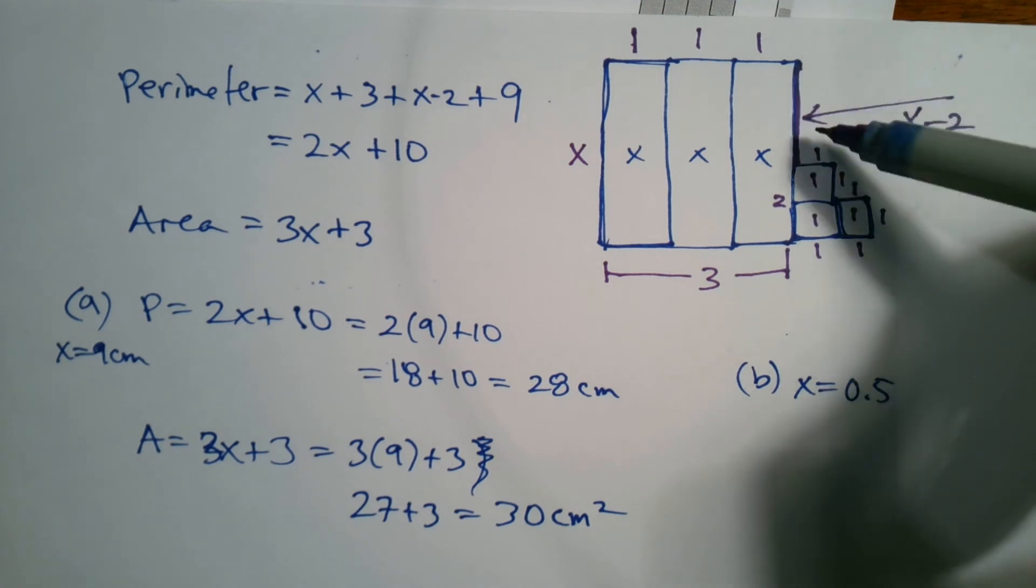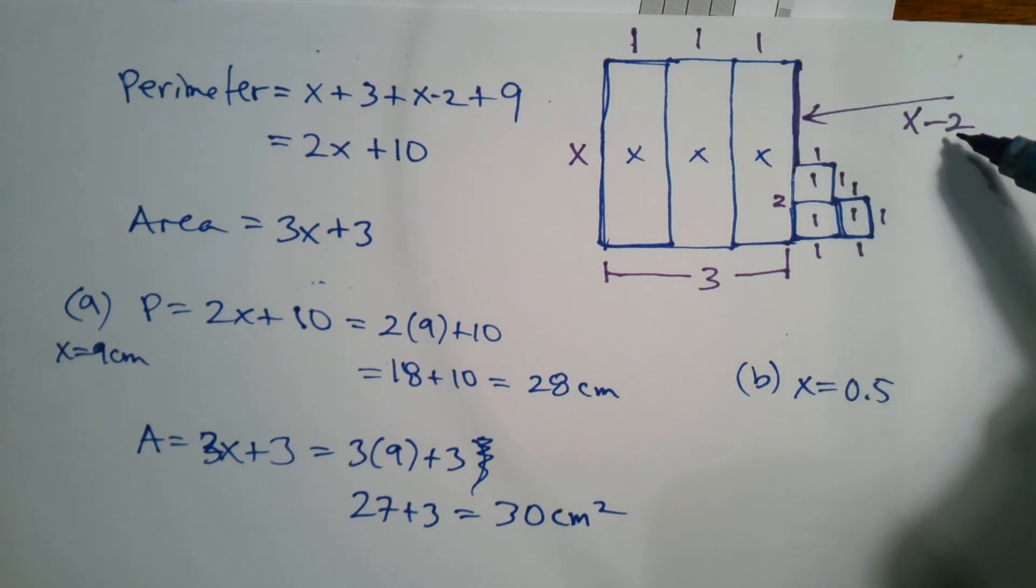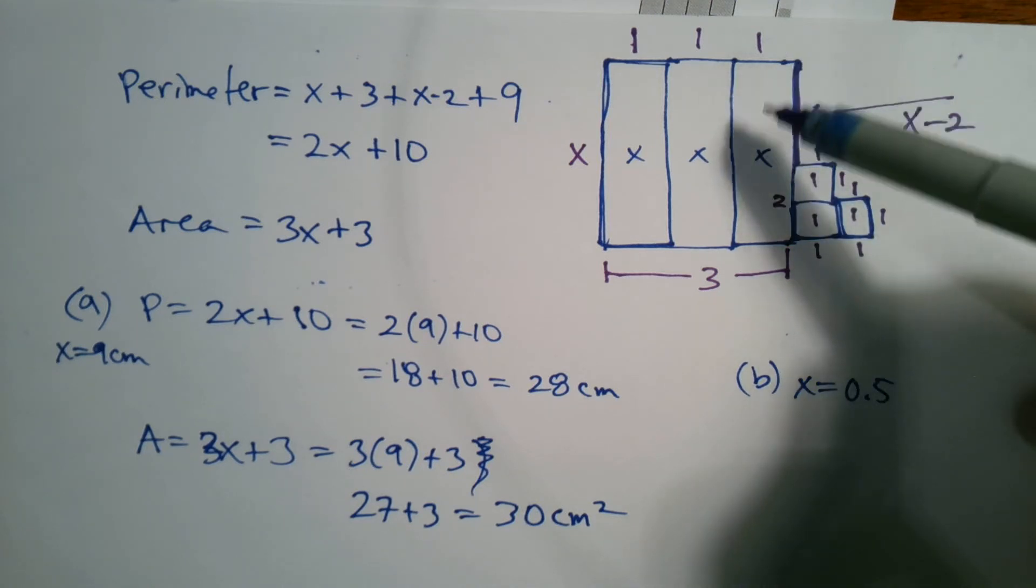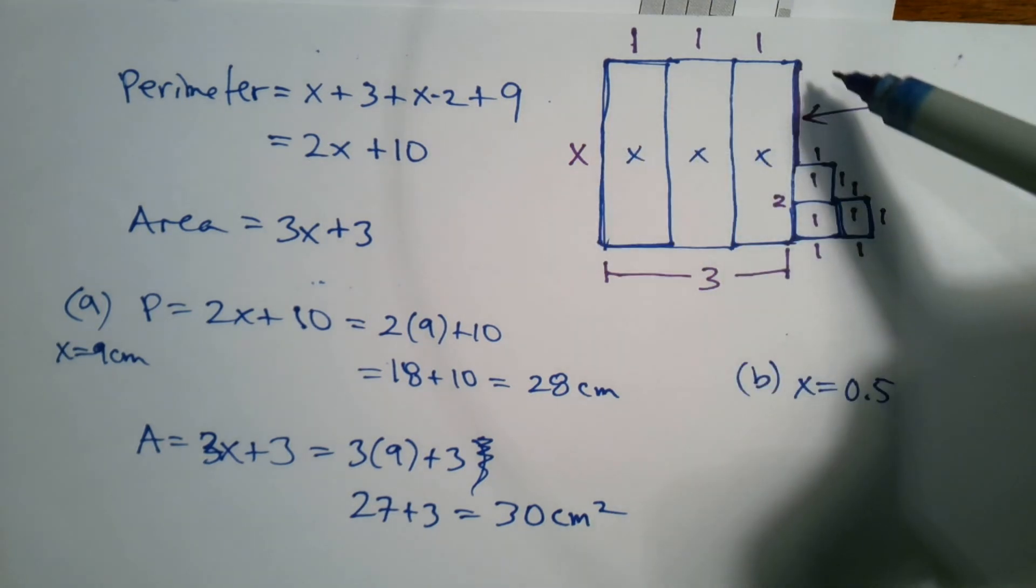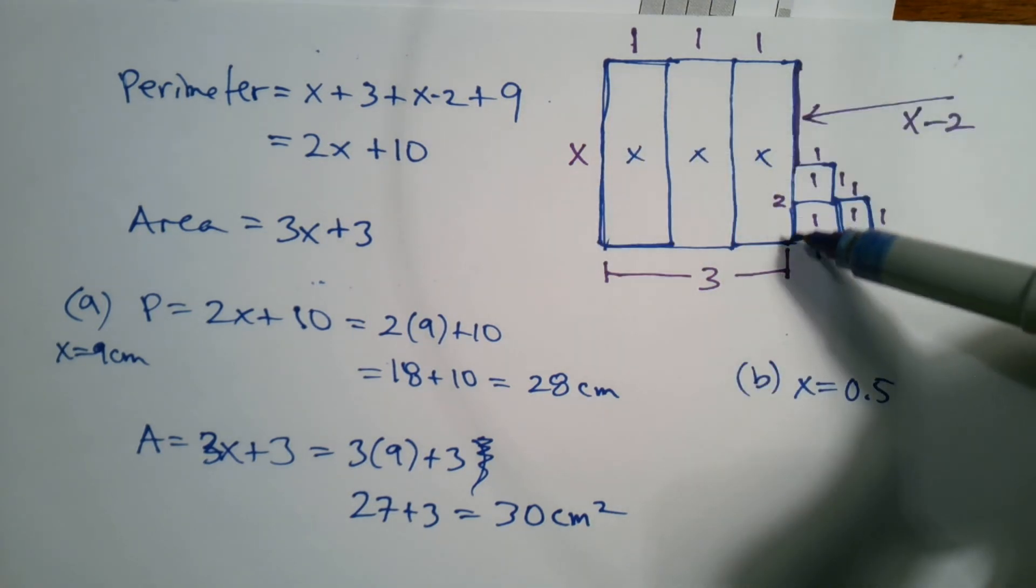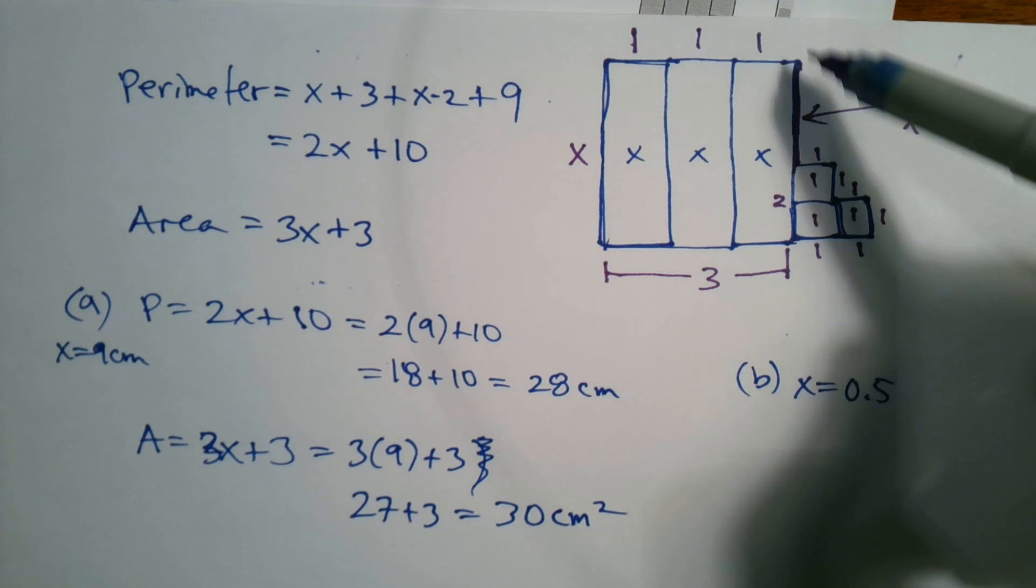Well, how can that length there be 0.5 minus 2? Right? Something's not right there, is it? Because if X was just 0.5, then that wouldn't exist.